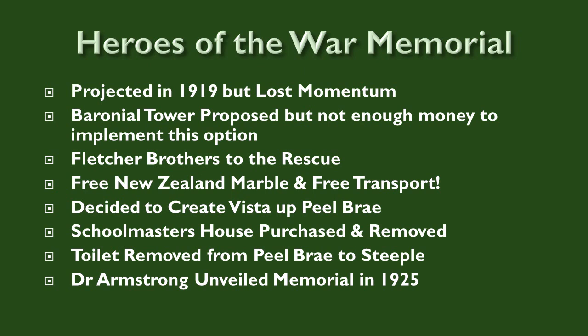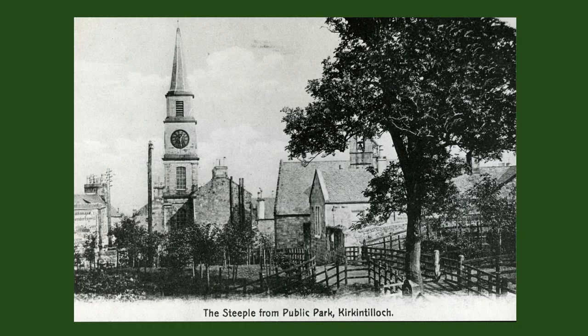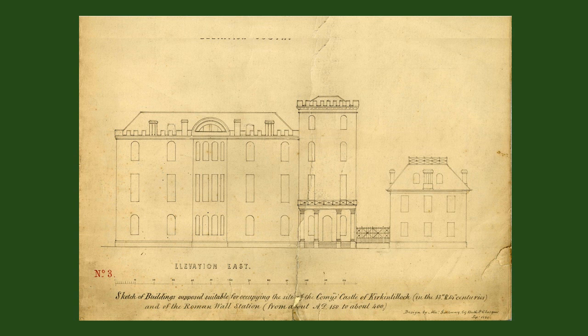After the end of the First World War in 1918, as in many other places, it was decided to build a war memorial in Kirkintilloch. The matter was discussed in 1919 when the Peel Park was identified as a suitable location. Construction of a new baronial tower was discussed, but it was agreed that this would be too expensive. This image is of an earlier proposal for a new built castle at the Peel by Alexander Galloway in 1880.